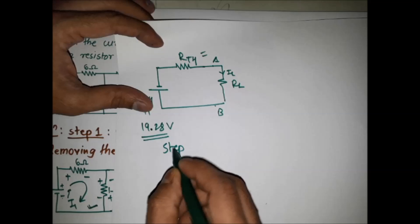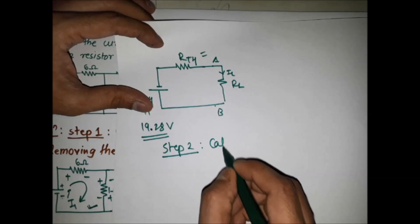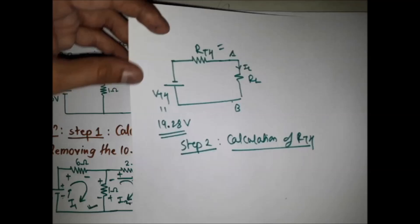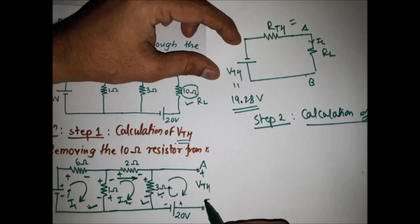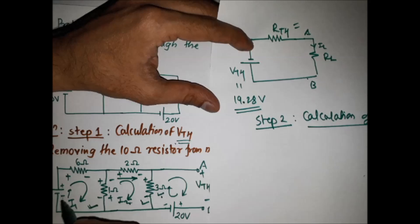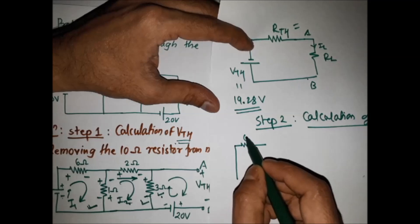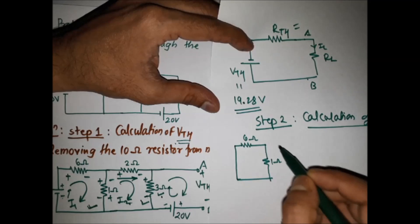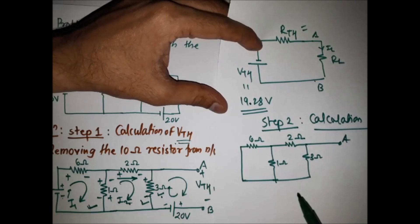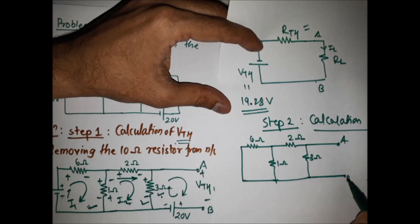Step 2 is the calculation of RTH. To find RTH, we replace the two terminals with RTH and replace all voltage sources and current sources with their internal resistances. Since the internal resistance of a voltage source is zero, we short circuit them. The 10 volt source is short circuited in series with the 6 ohm resistor, then there is the 1 ohm resistor, the 2 ohm resistor, and the 3 ohm resistor. Terminal A is here, the 20 volt source is short circuited, and terminal B is here.